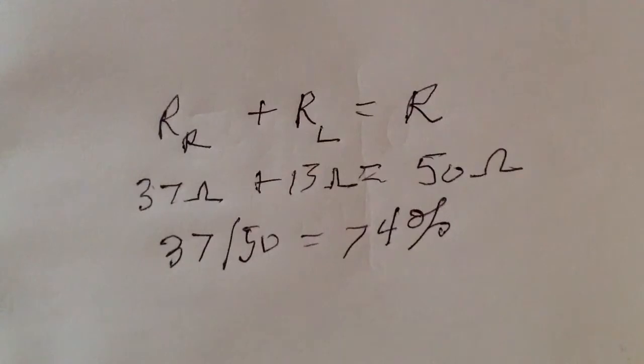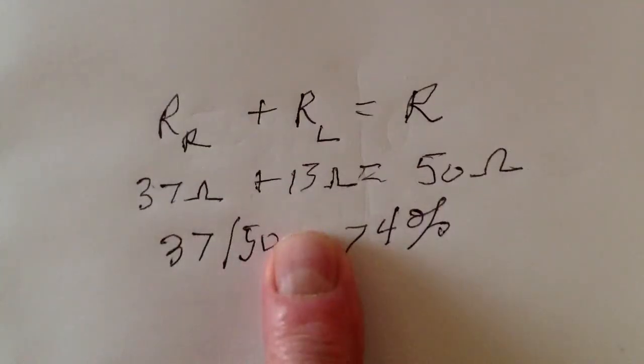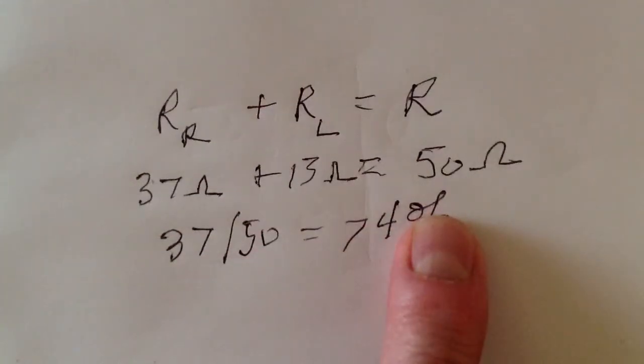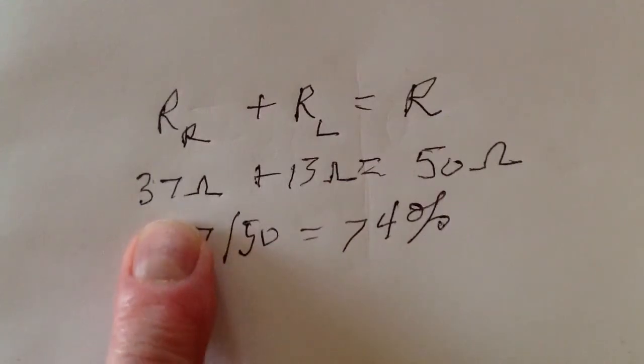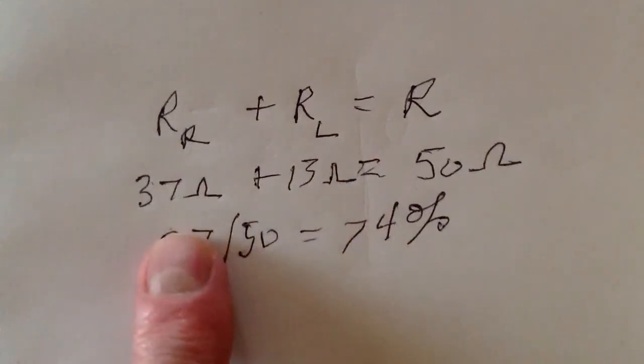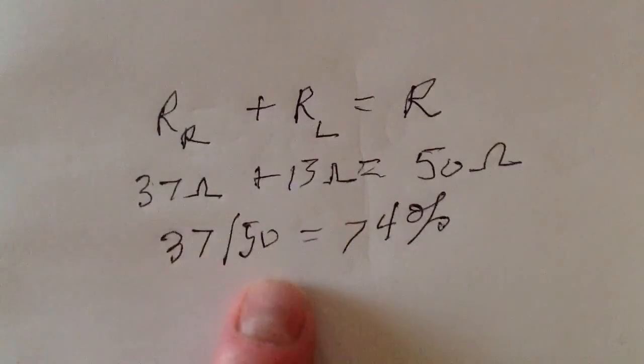Well, that's not too terribly bad, really, considering again how rotten that ground system is. The loss resistance, the entire loss resistance in that whole system had to be 13 ohms. It had to be, because the impedance had to be a pure resistance of 50 ohms. That's the only way you can get a one-to-one standing wave ratio. The radiation resistance has to be 37 ohms. That is a theoretical value that depends on its dimension in free space. So, 74 percent.